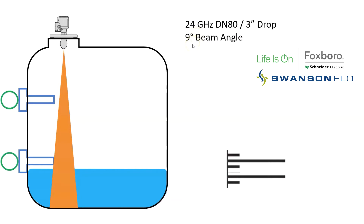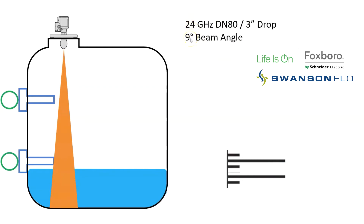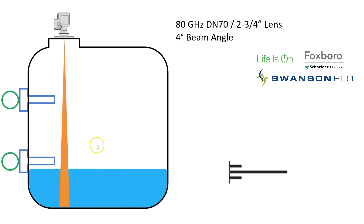When you get to a 24 gigahertz radar, the beam gets a little smaller. Remember, the lower the frequency the wider the beam, so at a higher frequency we see a smaller beam. At 24 gigahertz, with a three-inch drop antenna, you get a nine-degree beam angle. In the same size tank, it's going to miss the thermal well completely. You'd still program the radar to ignore the thermal well it does see, just like with the 10 gigahertz. At 80 gigahertz, the higher frequency gives us a much smaller beam angle.